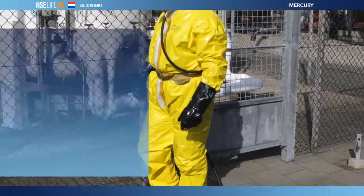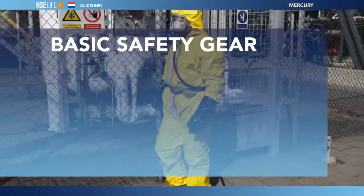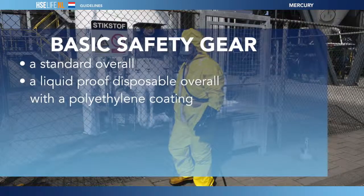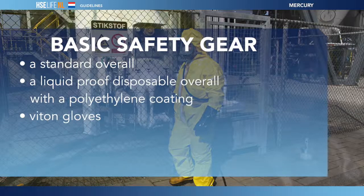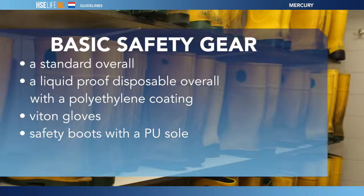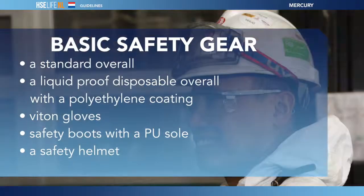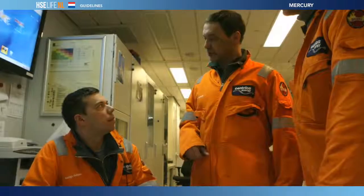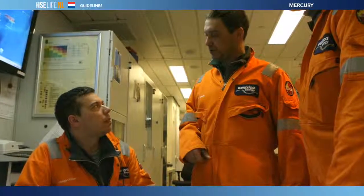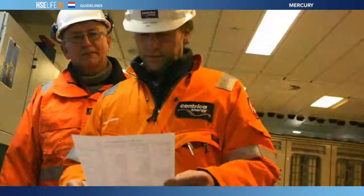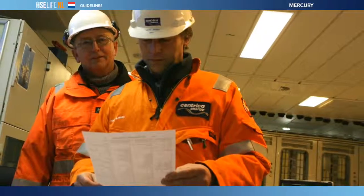The basic safety gear for operations with mercury is a standard overall — a liquid-proof disposable overall with a polyethylene coating — VITON gloves, safety boots with a PU sole, a safety helmet and safety glasses. For work involving a specific risk, the supervisor determines the additional protection equipment required. These are specified in the work permit.